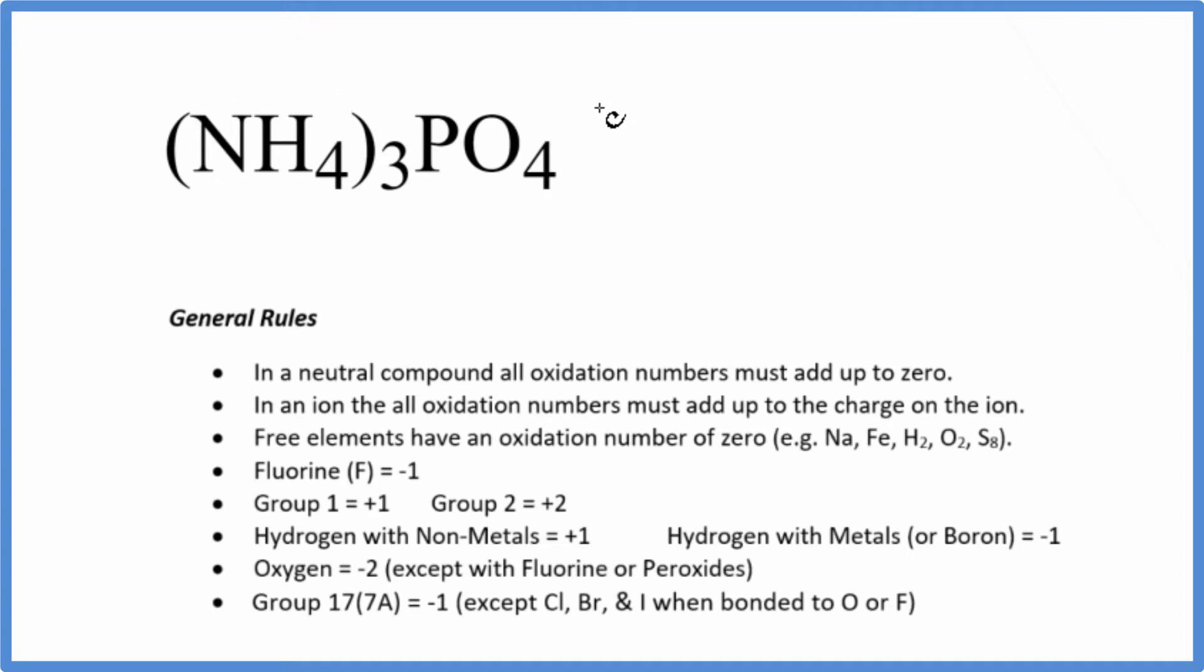Overall, the whole thing doesn't have a negative or positive sign after it, so it's a neutral compound. But we have these two ions. We have the ammonium ion, which has a 1+ ionic charge, and then the phosphate ion, this whole thing has a 3- ionic charge. We have three ammonium ions.